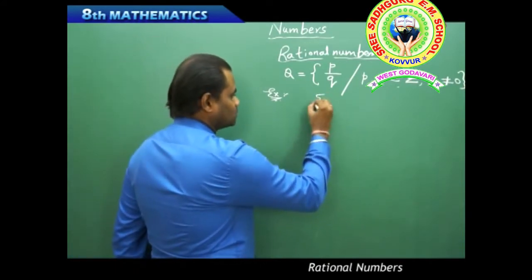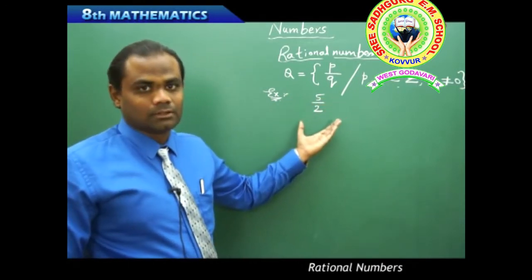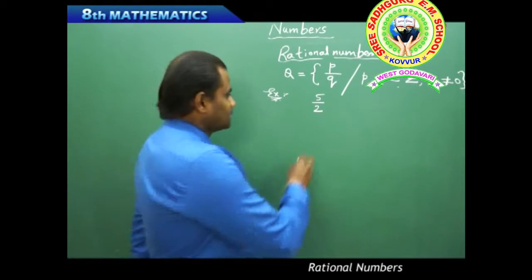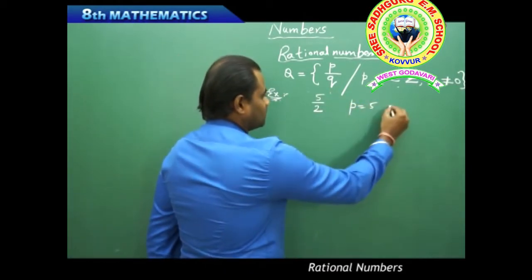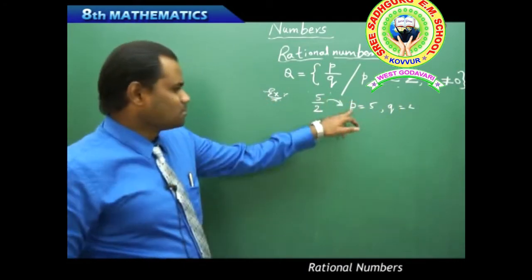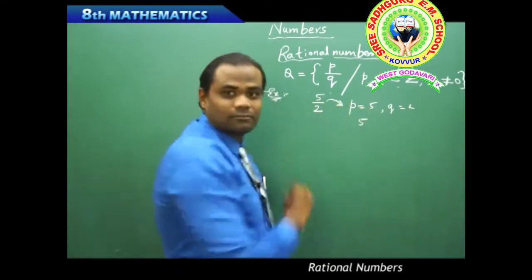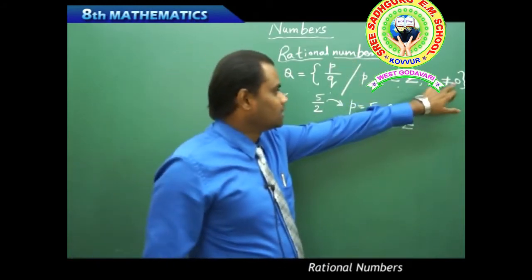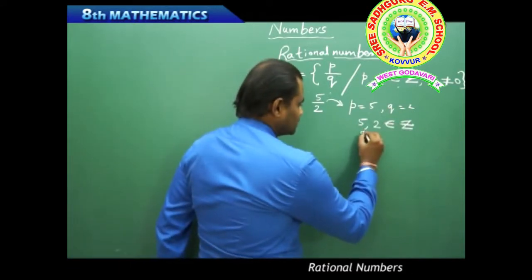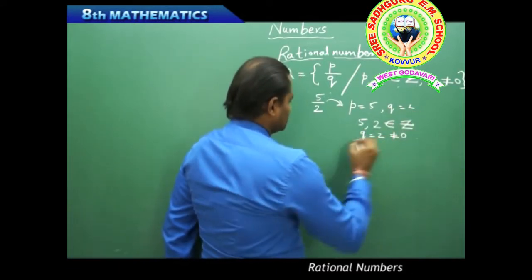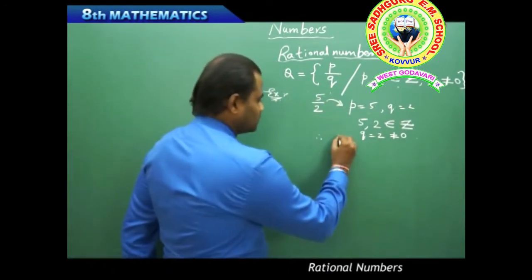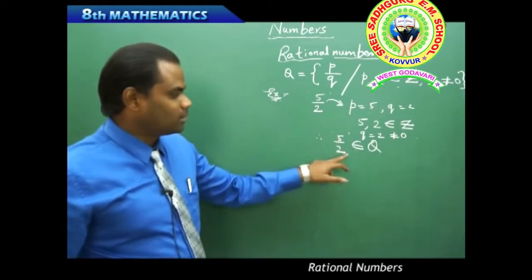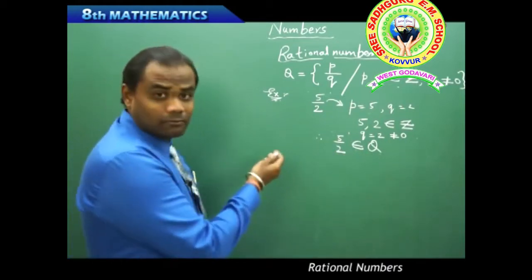For example, is 5/2 a rational number? Here P is 5 and Q is 2. We identify that 5 and 2 are integers, and Q equals 2 is not equal to 0. Therefore, 5/2 satisfies the definition of rational numbers and belongs to Q.